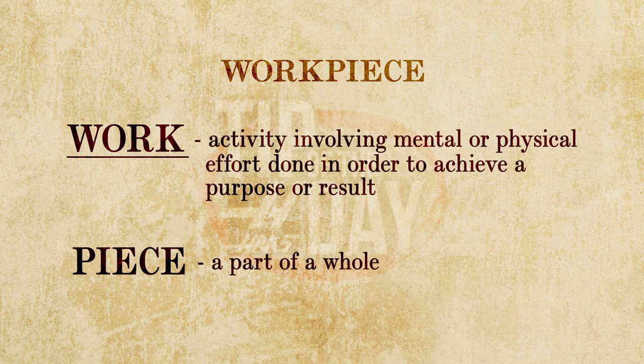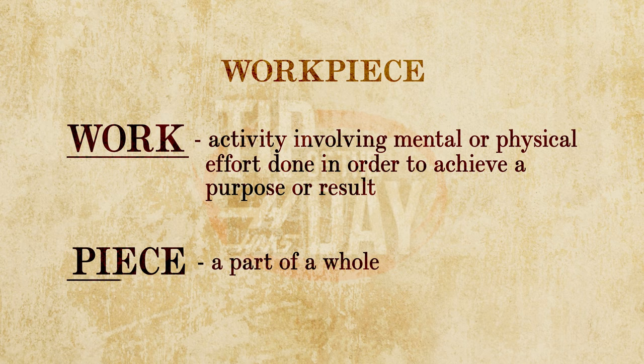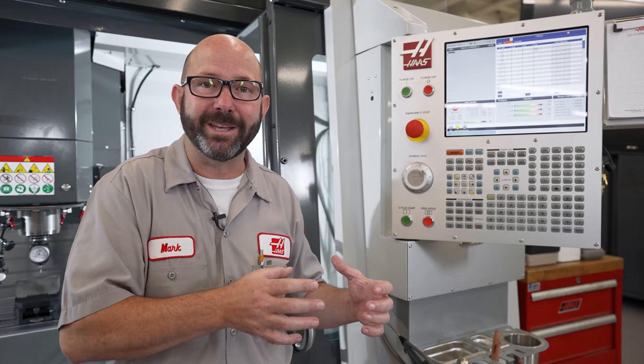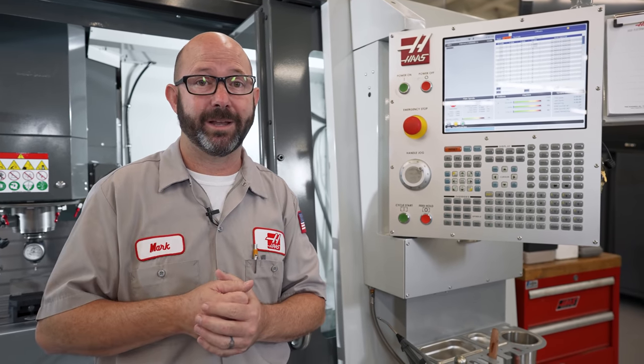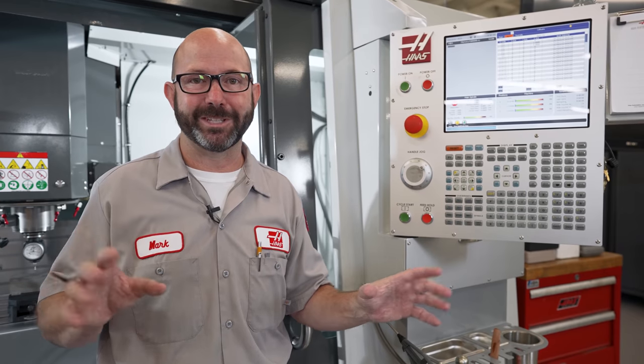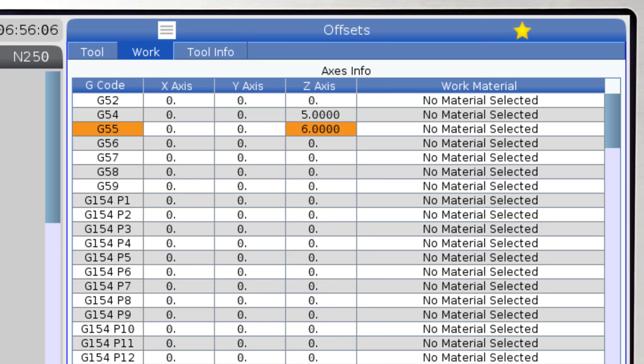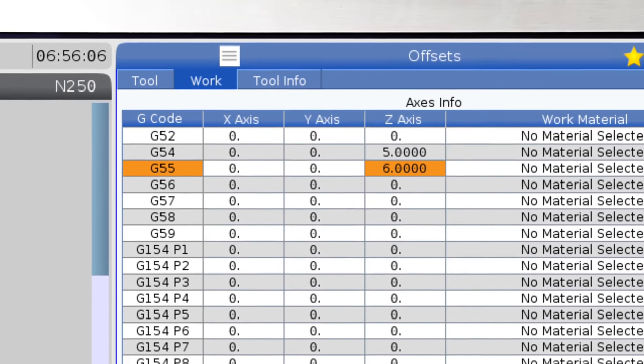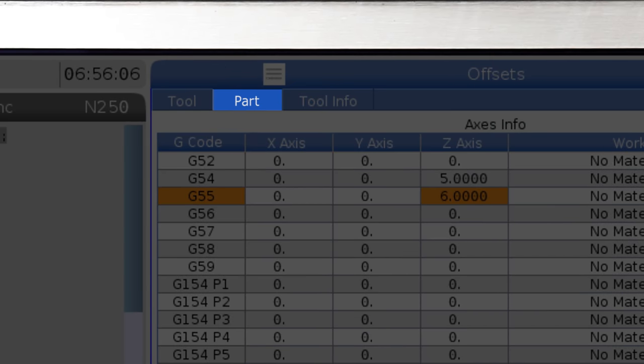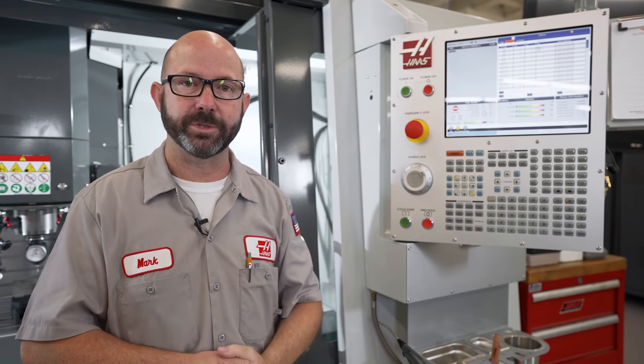It comes from two different words: work, which is from the old English to work on something, and the old French piece, which just means a part. So our workpiece is just any type of part that we're working on in the machine. I'm being ridiculous with the definitions here because I just want to get the point across that our work offset page really could have been called our part offset page, and our tool offset page is for our tools.